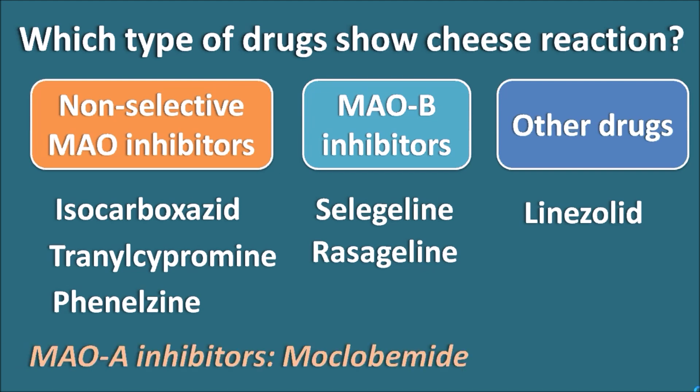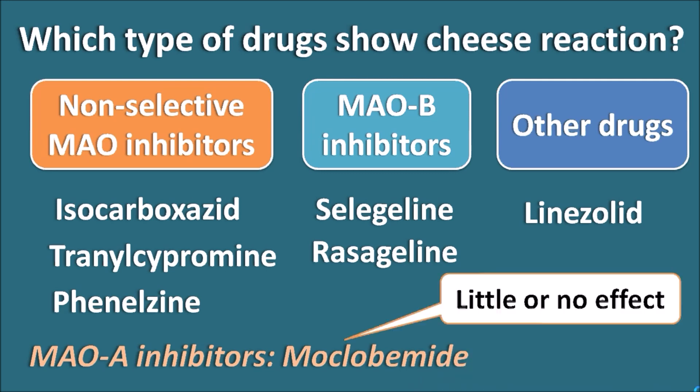In contrast, the MAO inhibitor moclobemide shows less cheese reaction because it is selective for inhibition of the MAO-A enzyme. Therefore, moclobemide has little or no effect in precipitating the cheese reaction.